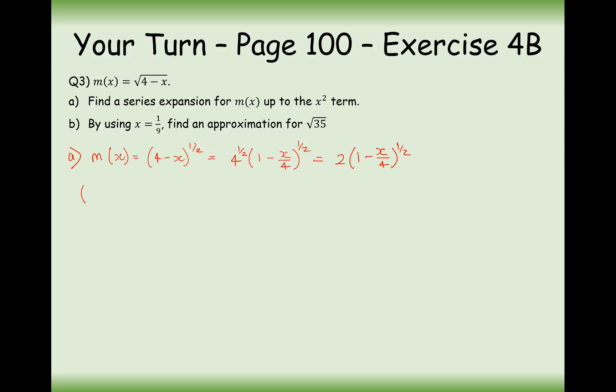Now let's substitute it into the binomial expansion. We're going to have 1 minus x over 4 to the power of a half. Up to the x squared term. 1, and then it's going to be positive half.